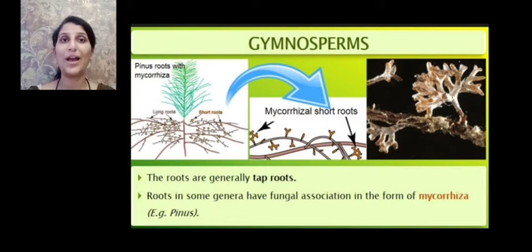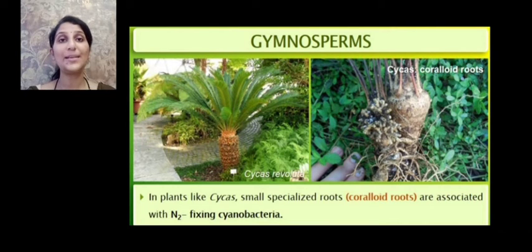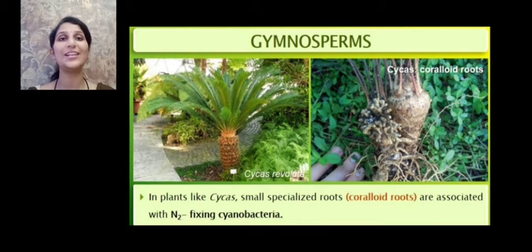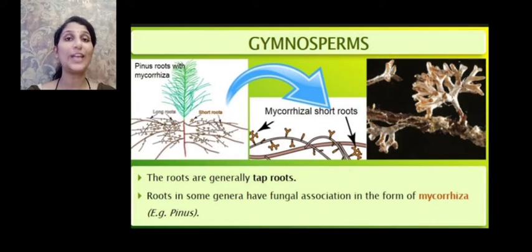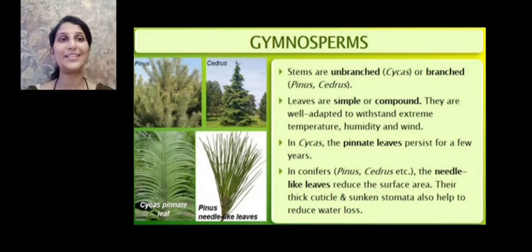Mycorrhiza helps to protect the plant from soil-borne pathogens and increases the absorption of nutrients, among many other benefits. In plants like Cycas, which is a shrub-like plant, small specialized roots called coralloid roots are present. These have a symbiotic association with certain cyanobacteria, which have specialized cells called heterocysts that help in nitrogen fixation. So two types of symbiotic associations are seen in gymnosperm roots: mycorrhiza with fungi, and coralloid roots with cyanobacteria.